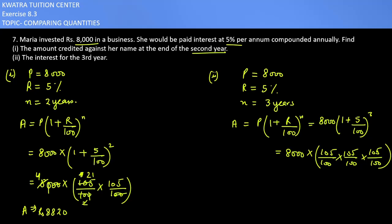Now cancel two zeros with zeros and one zero with one zero. Reduce 105 and 10 first: this will be 21 and 2, and another 21 and 2. Then reduce 2 with 8 to get 4, reduce 4 with 20 to get 5, and reduce 5 with 105 to get 21. So basically you have 21 × 21 × 21 × 21, and the value you get is nine thousand two hundred and sixty one rupees. This is the amount for the second case.